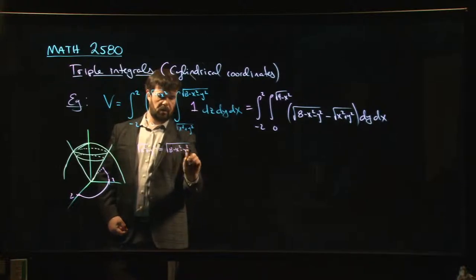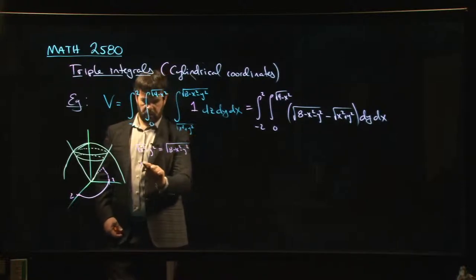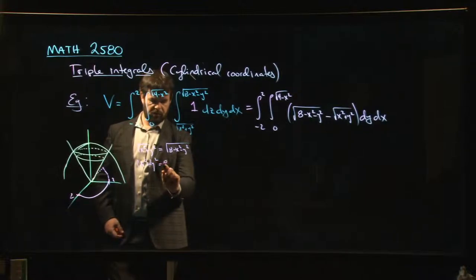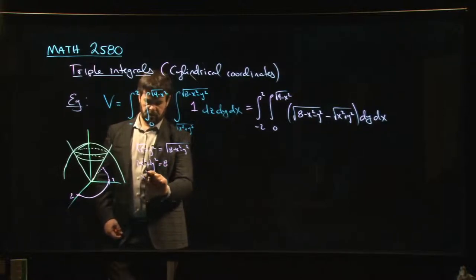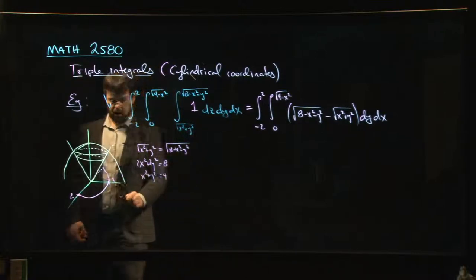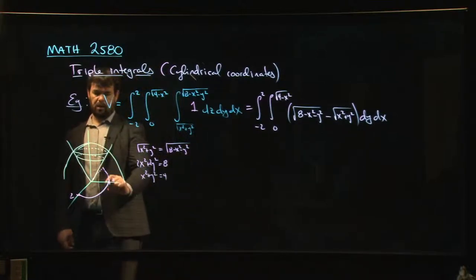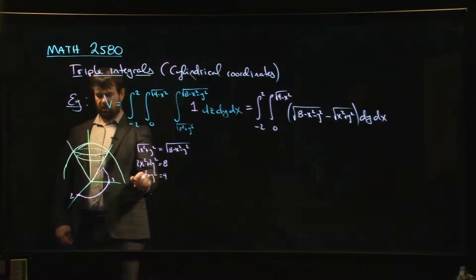x squared plus y squared equals, well there's another one over there. Bring it over, 2x squared, 2y squared equals, left with 8. x squared plus y squared equals 4.